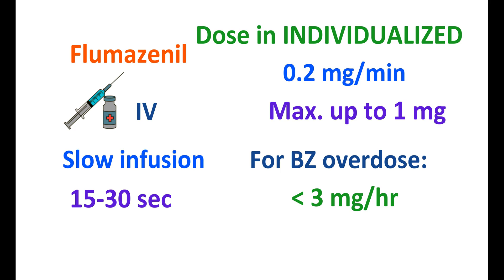In people with any re-sedation, Flumazenil can be re-administered after 20 minutes; however, it is completely individualized based on patient conditions. In summary, Flumazenil is a Benzodiazepine receptor antagonist with no significant agonist activity. It is mainly used to reverse the sedative effect produced by Benzodiazepine anesthetics and to control symptoms of Benzodiazepine overdose. However, it cannot completely restore all symptoms — particularly, it cannot reverse respiratory depression. Dizziness is one important side effect, and this drug may increase the risk of seizures in people with any existing risk factors.